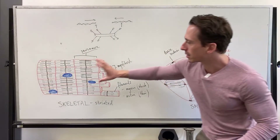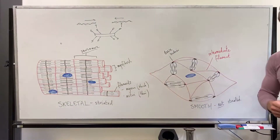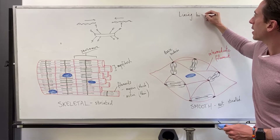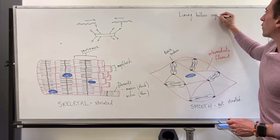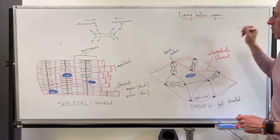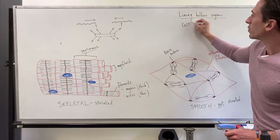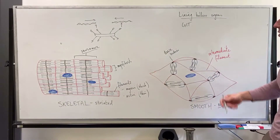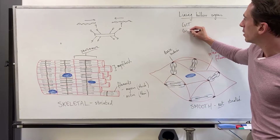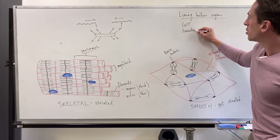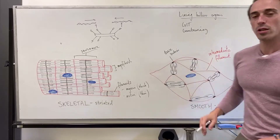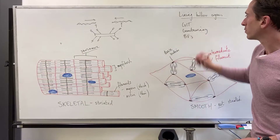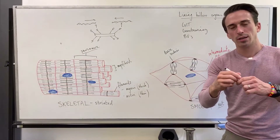Skeletal muscle is attached to the skeleton, but smooth muscle we find lining hollow organs. The types of organs with smooth muscle include the whole gastrointestinal tract — esophagus, stomach, small intestines, large intestines, rectum, colon — as well as the genitourinary tract (reproductive and urinary tracts) and blood vessels. All of these structures have smooth muscle in them.